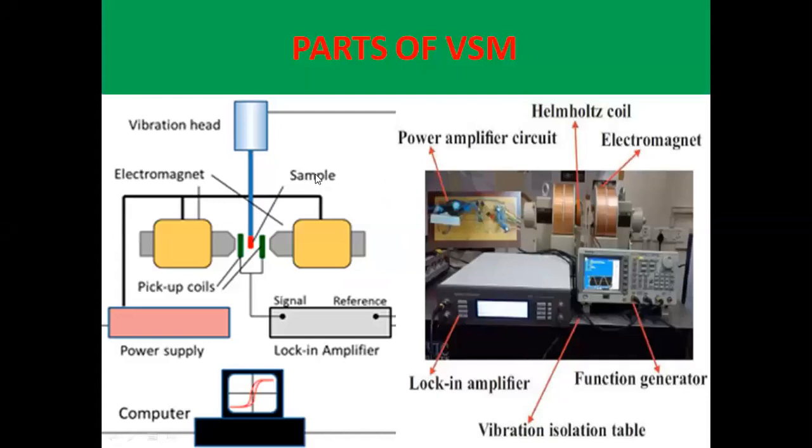Next is the diagram we have. This is the part of VSM. This is the vibration head. This yellow color is the electromagnet. This is the sample which is present in the sample holder. These green colors are pickup coils. We have power supply, lock-in amplifier, and the computer system.